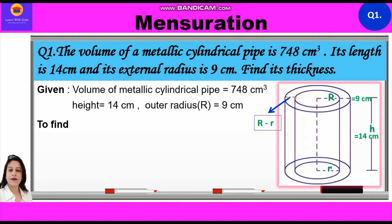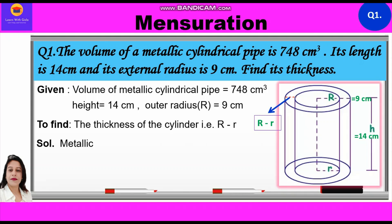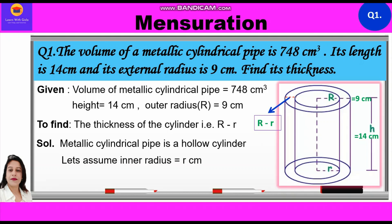We have to find the thickness of the cylinder, that is capital R minus small r. A metallic cylindrical pipe is a hollow cylinder, so we shall use the formula for the volume of a hollow cylinder. Let the inner radius be r cm and outer radius R = 9 cm.